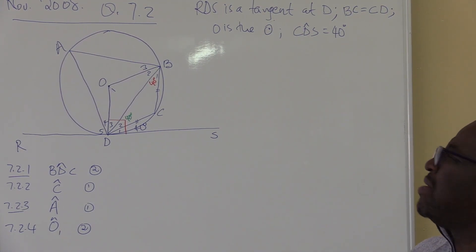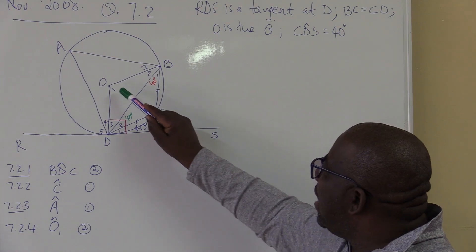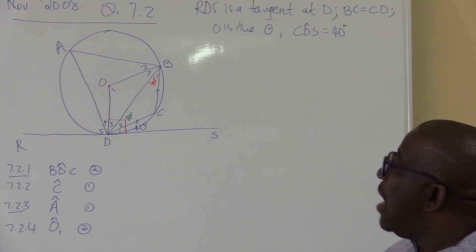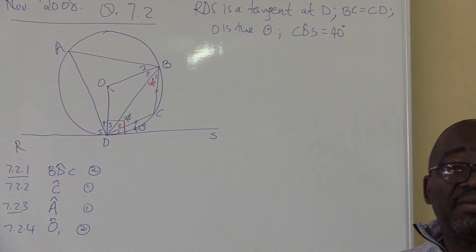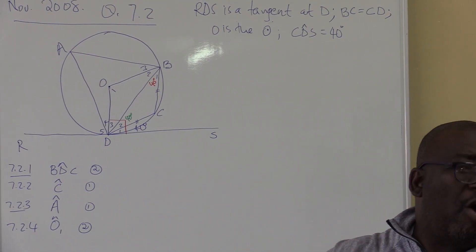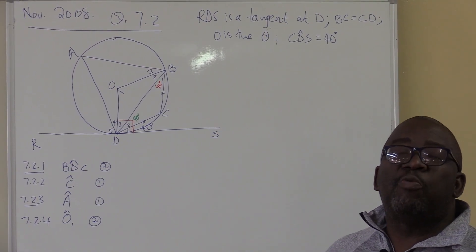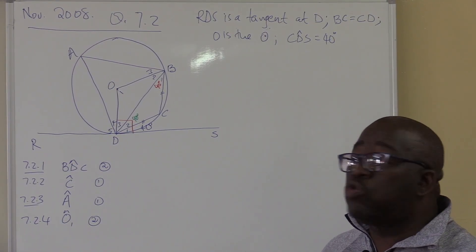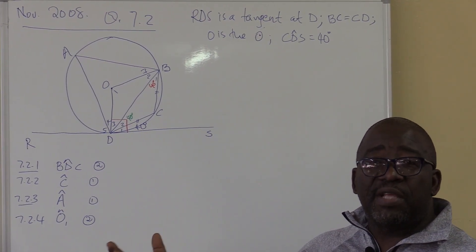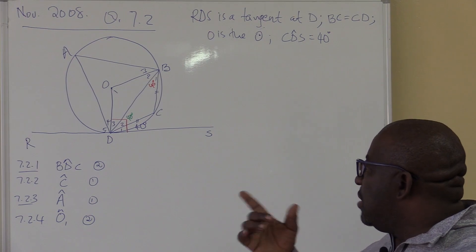Let me just stop there, because I can see the center theorem also — the angle at the center is twice the angle at the circumference. I see all those theorems in this diagram. If you go there with an open mind, knowing that all that is required is to identify the theorems, and there are only ten of them.